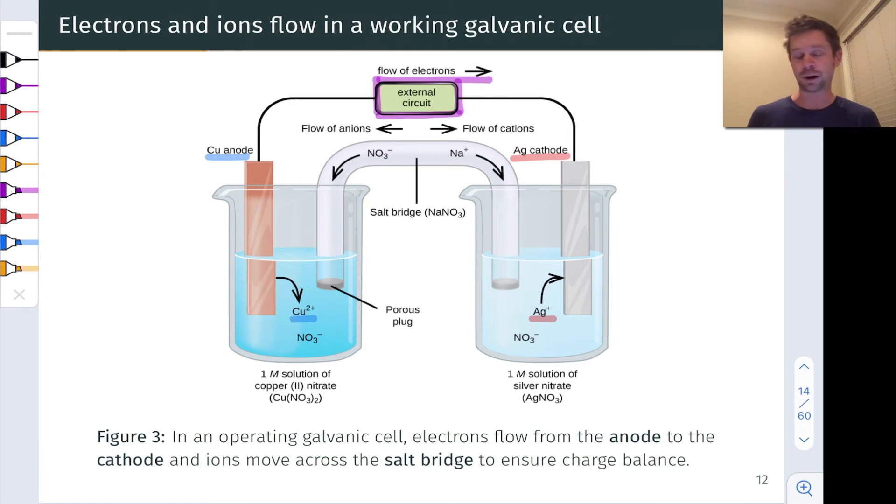To fix that problem, we need a piece of glassware that allows ions to flow from one side to the other, from one half cell to the other. This is what's known as a salt bridge. The salt bridge consists of porous plugs that allow ions to pass through and a solution inside the bridge, often containing additional unreactive ions, Na plus and NO3 minus in this example, that travel to ensure charge balance.